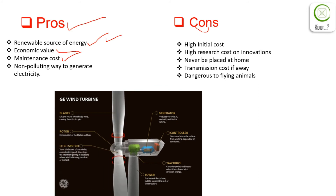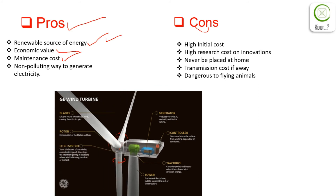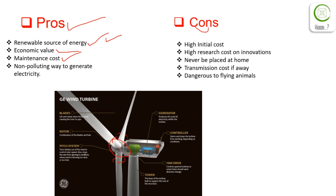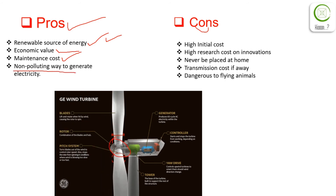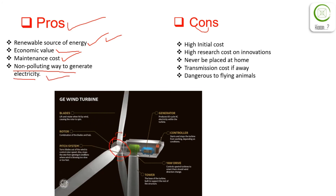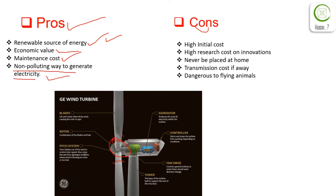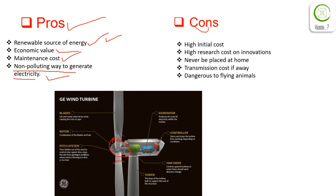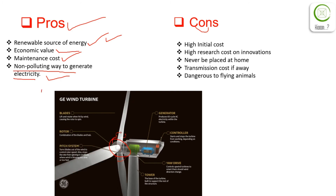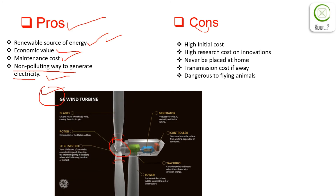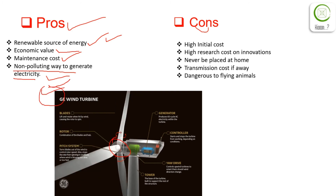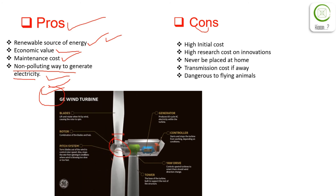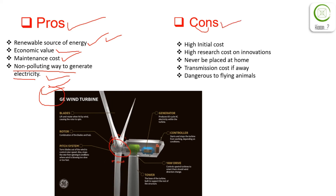The third pro is low maintenance cost. The maintenance cost is low compared to coal-based power plants or nuclear power plants, though there is still some maintenance cost because there are many moving parts. The fourth pro is that it is a non-polluting way to generate electricity — it has no adverse effect on the environment, though it does produce a little noise, but if it is placed away from cities this won't cause any adverse effects.